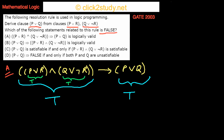Let's take the case where R is false. If R is false, then not R is true, so (Q or not R) is automatically true. For (P or R) to be true with R false, P is forced to be true. Since P is true, (P or Q) on the right side is also true.